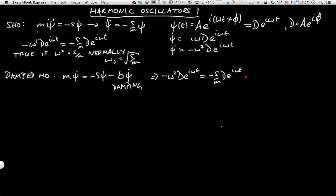Now we have an extra term: minus iω b over m D e^(iωt). Again we see that the terms D e^(iωt) are the same on both sides of the equation, so we don't need to worry about those.